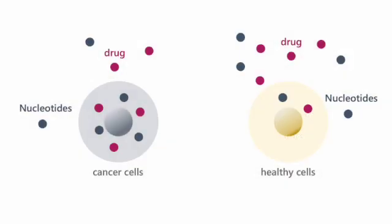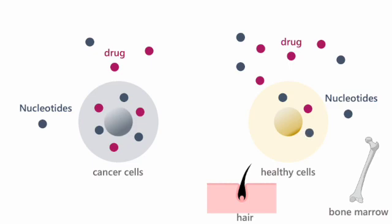On the other hand, even normal cells, if they are highly proliferative, such as bone marrow cells or hair cells, mistakenly take in large amounts of proliferation-disrupting drugs along with the materials necessary for proliferation. Therefore, they are susceptible to cell damage, leading to side effects such as bone marrow suppression and hair loss.